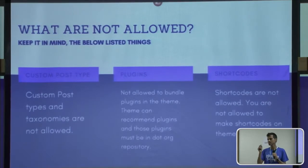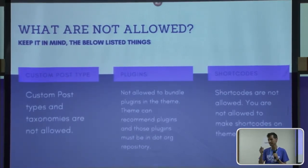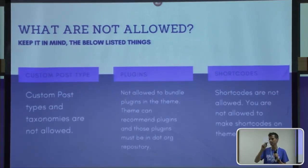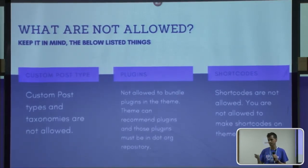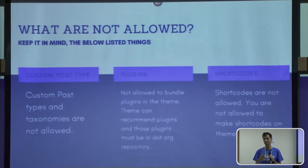Including custom post types in themes is not allowed in WordPress.org. For example, if you are going to make a custom post type for team, testimonials, or something like that — that is not allowed. If you need to use custom post types, you need to develop compatible plugins and that plugin must be in WordPress.org. Various other marketplaces allow custom post types and taxonomies, but WordPress.org does not allow them.